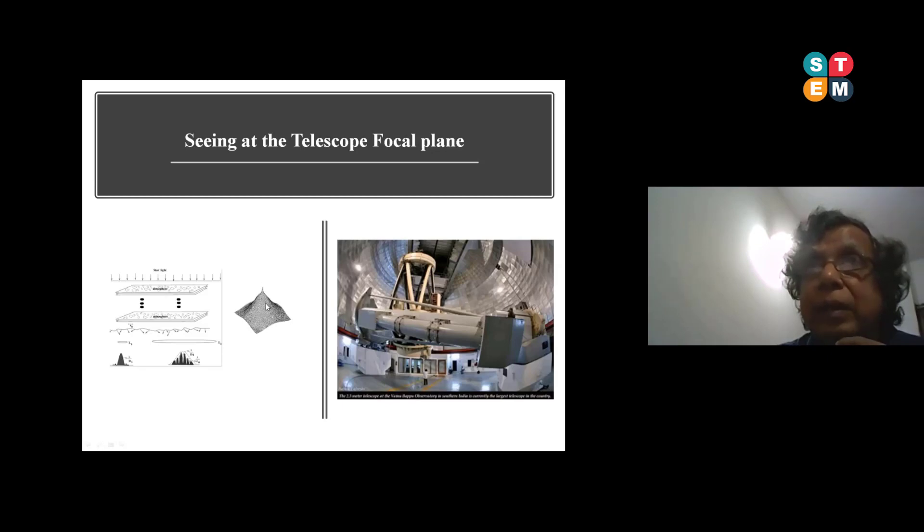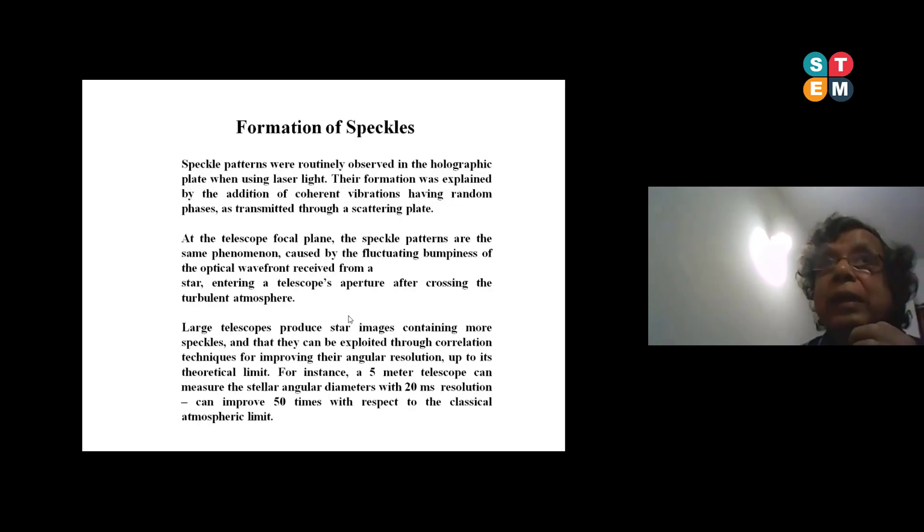The two meter telescope will have 50 milliarcseconds. If the sky is good, atmosphere is laminar flow, if it flows, then you get about say one arcsecond image. But then between one arcsecond and the diffraction limit you will not get any information because it gets overexposed.